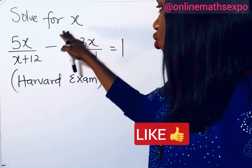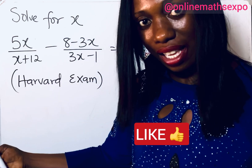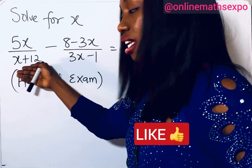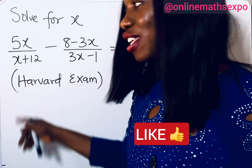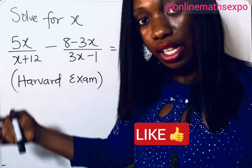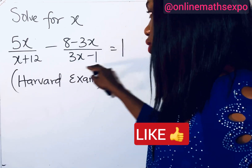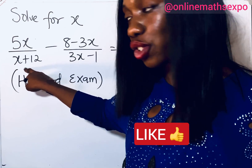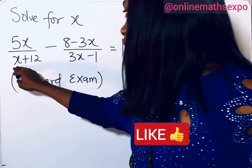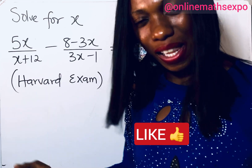When you see something like this, because it involves a fraction, you need to look for the LCM of the denominators. Remember, this denominator here is an expression. Each time you have an expression at the denominator — because we have two terms joined by an operation — the two expressions become the LCM.